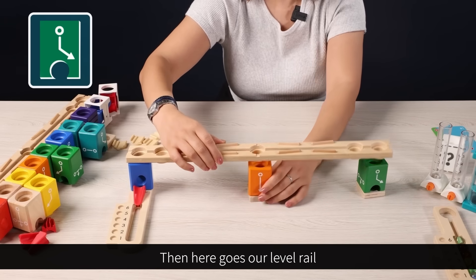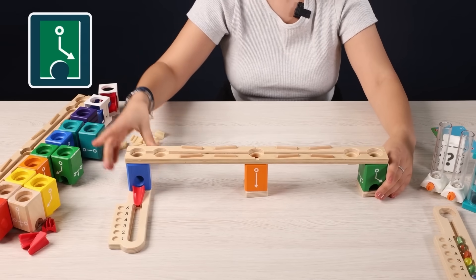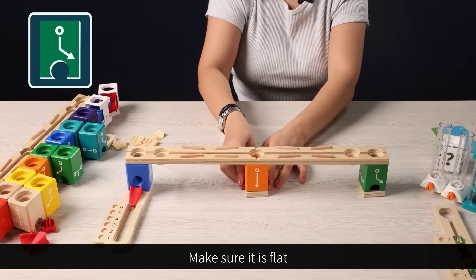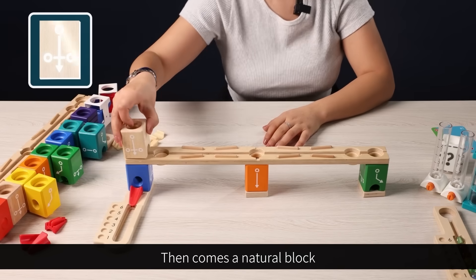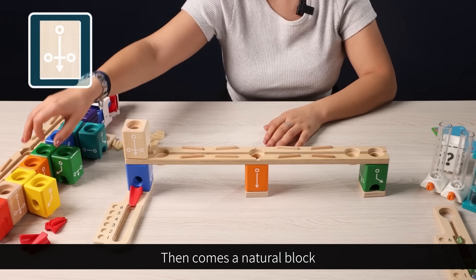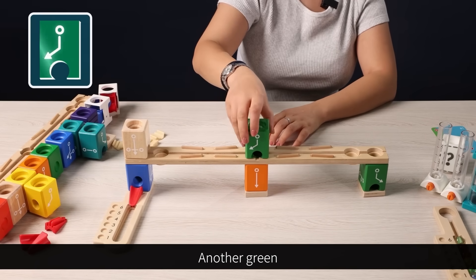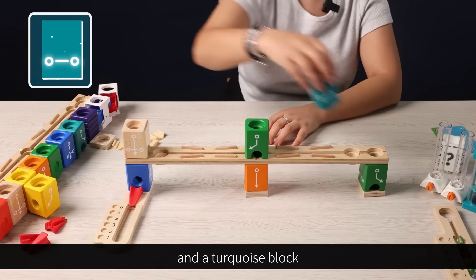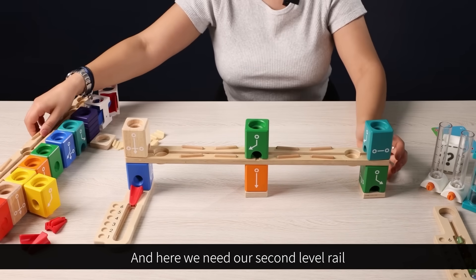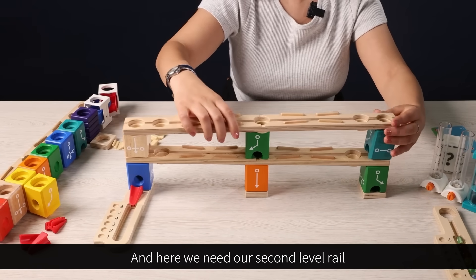Then, here goes our level rail. Make sure it is flat. Then comes a natural block, another green, and a turquoise block. And here, we need our second level rail.